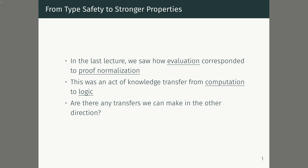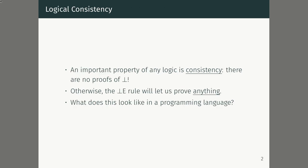We did a transfer from computation to logic because evaluating a proof makes less sense than evaluating a program. But then you can ask the converse question: we went from computation to logic, but is there any way we can go in the other direction? Is there any property of logic that doesn't make intuitive sense in computation but can shed light on computation once we transfer it? An important property of any logic is the property of consistency — that there are no proofs of false.